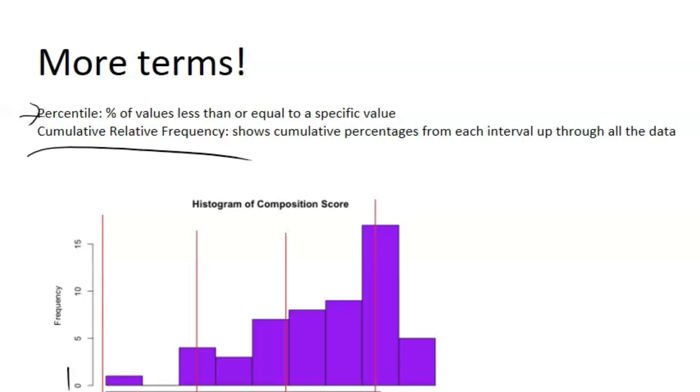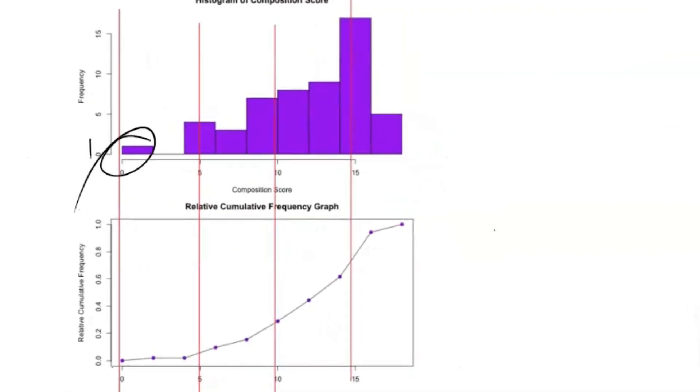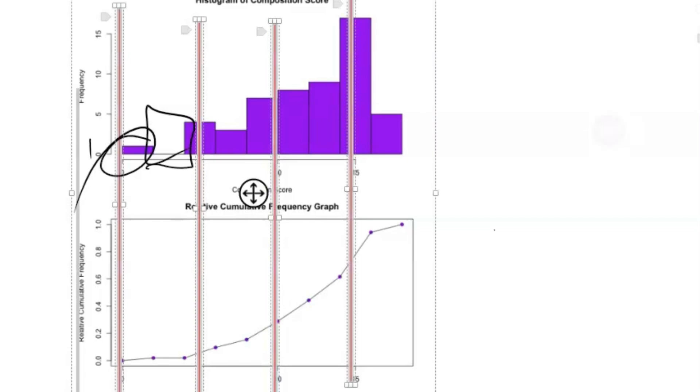And then we also have cumulative relative frequency. So that shows the cumulative percentages from each interval up through all the data. And here we have a visual. So you can see here when we have a data point, that obviously is graphed. But when we don't have any data, that is just a straight plateau.